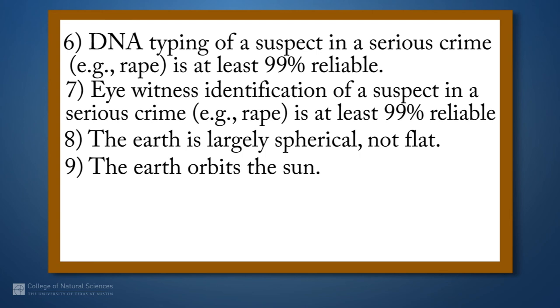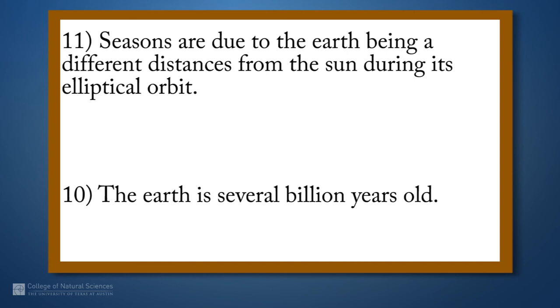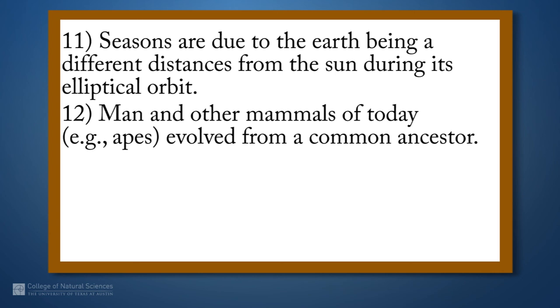The Earth orbits the sun and in case the language is confusing here, we have the sun here and the earth is out there. Ten. The Earth is several billion years old. Eleven. Seasons are due to the Earth being at different distances from the sun during its elliptical orbit. So out here it'd be summer because the orbit isn't exactly circular. So when you're further away you'd have one season then close to a different season. Twelve, man and other mammals of today, e.g. apes, evolved from a common ancestor.